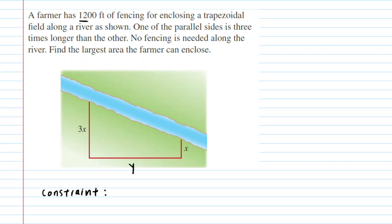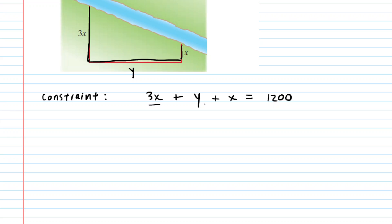In this case, the farmer is constrained to have only 1,200 feet of fencing. So what this means is that if we added up all the lengths of the fence, it would have to come out to equal 1,200. In other words, we could say that 3x plus y plus x must equal 1,200. And then we can simplify this constraint equation by adding the 3x and the 1x. This gives us 4x plus y is equal to 1,200.